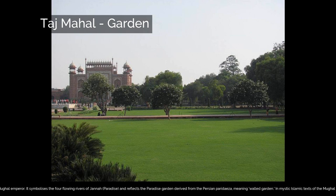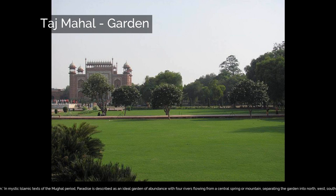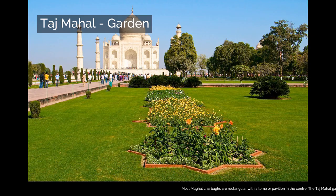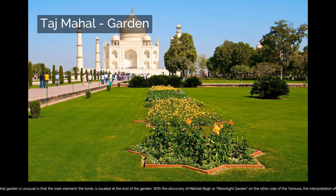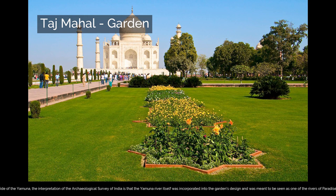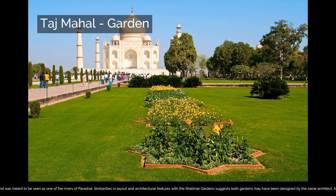In mystic Islamic texts of the Mughal period, paradise is described as an ideal garden of abundance with four rivers flowing from a central spring or mountain, separating the garden into north, west, south, and east. Most Mughal charbaghes are rectangular with the tomb or pavilion in the center. The Taj Mahal garden is unusual in that the main element, the tomb, is located at the end of the garden. With the discovery of the Mahtab Bagh, or Moonlight Garden, on the other side of the Yamuna, the Archaeological Survey of India interprets the Yamuna river itself as incorporated into the garden's design, meant to be seen as one of the rivers of paradise. Similarities in layout and architectural features with the Shalimar Gardens suggest both gardens may have been designed by the same architect, Ali Mardhan.